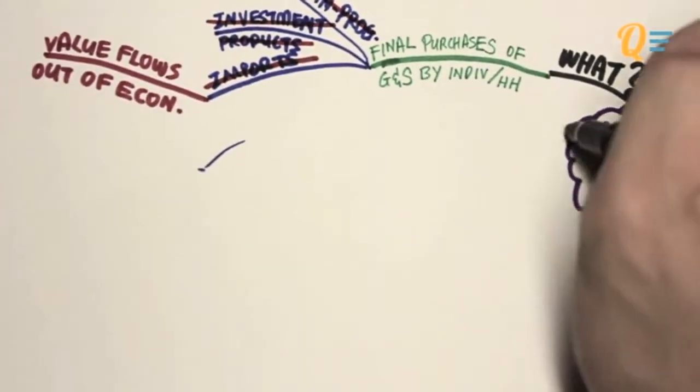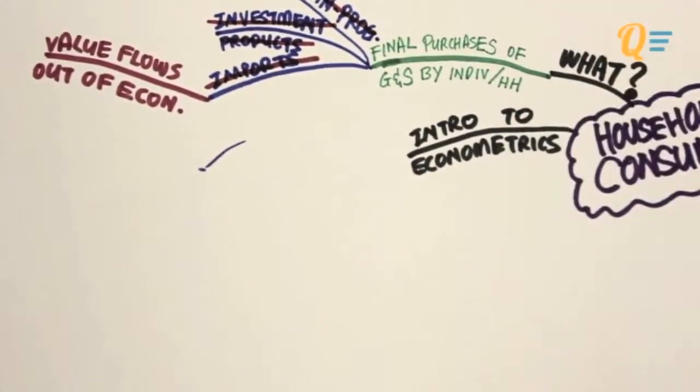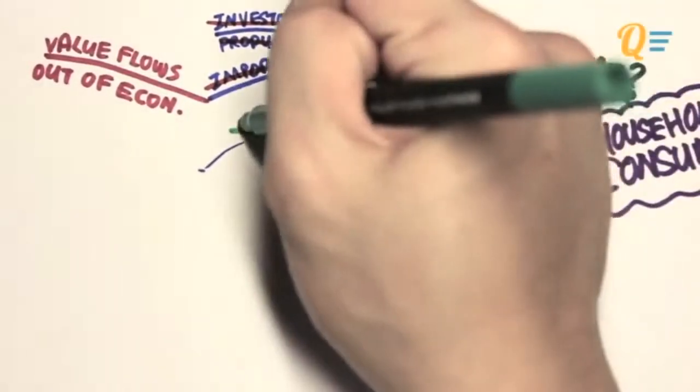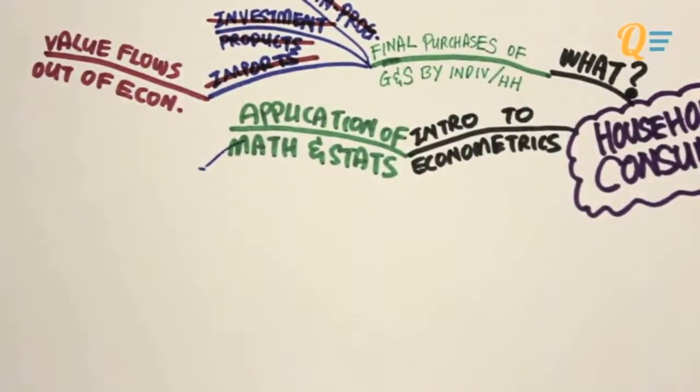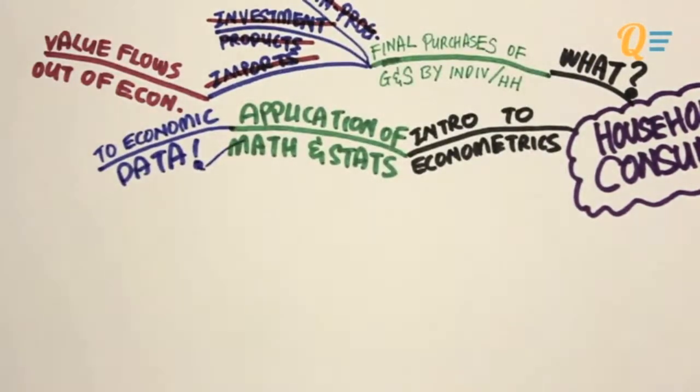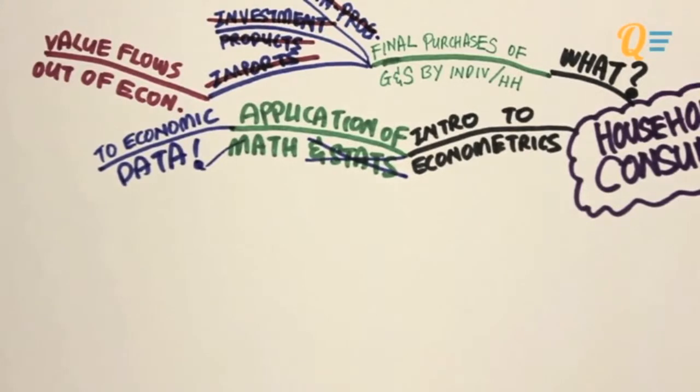I'm now going to introduce to you the concept of econometrics. Now, econometrics is not part of your syllabus, but me explaining this to you will help you to understand macroeconomics at a much better level. In a nutshell, econometrics is the application of math and stats to economic data. And for the purpose of this video, I'm not going to talk about statistics.